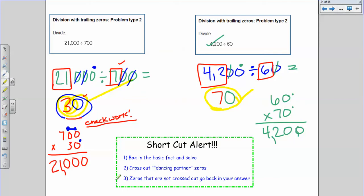So these are examples of the Alex topic division with trailing zeros, problem type two. Hope this has helped and we'll see you again soon.